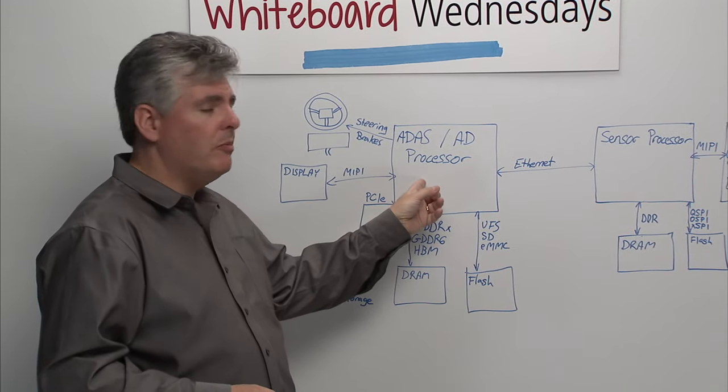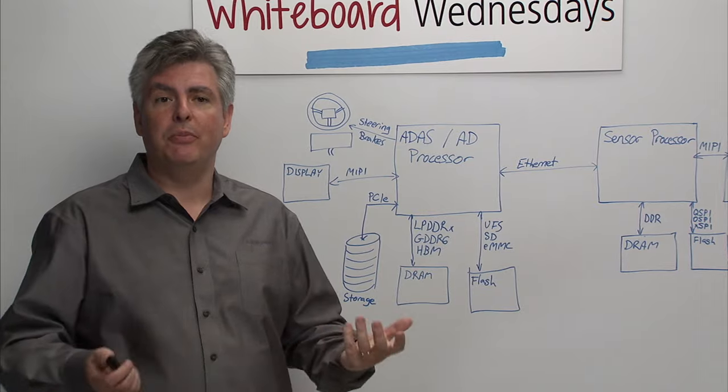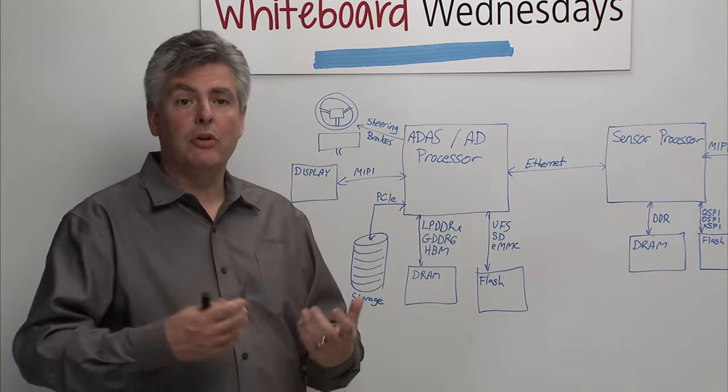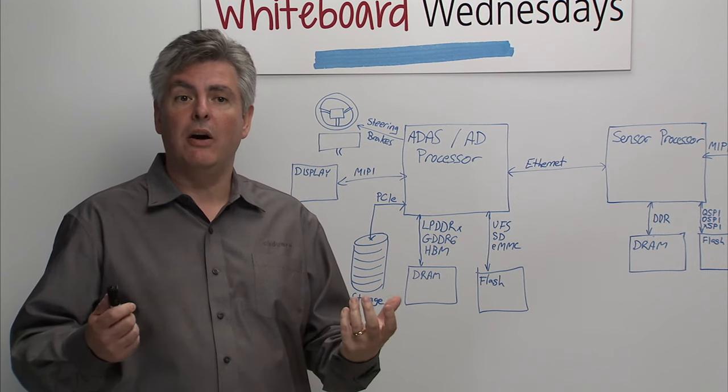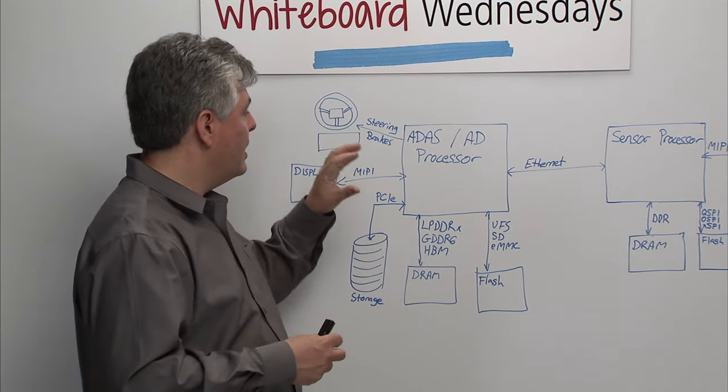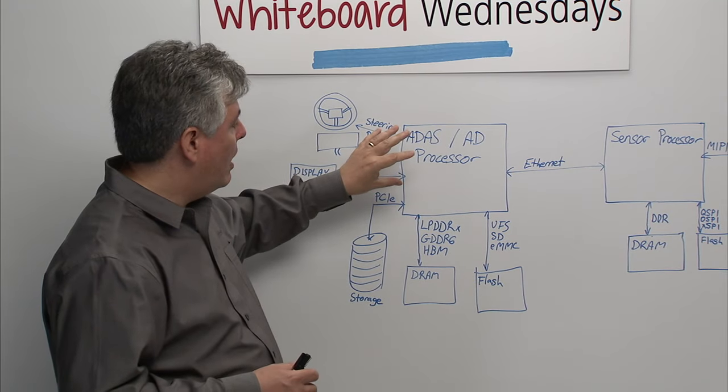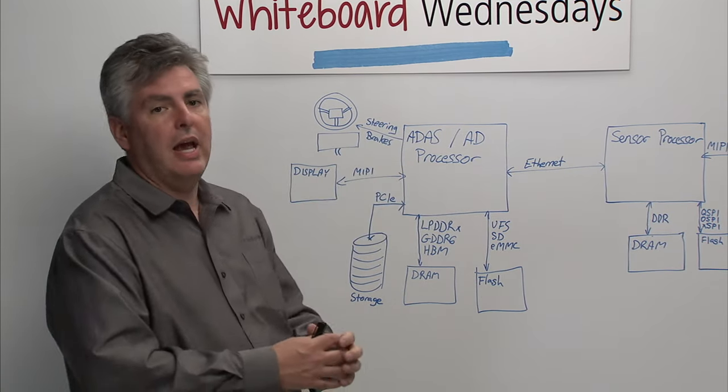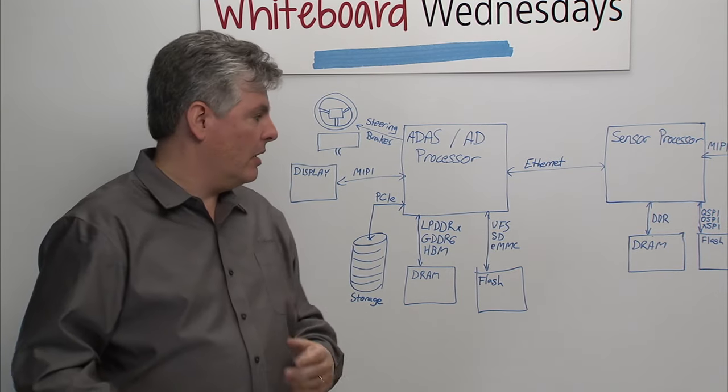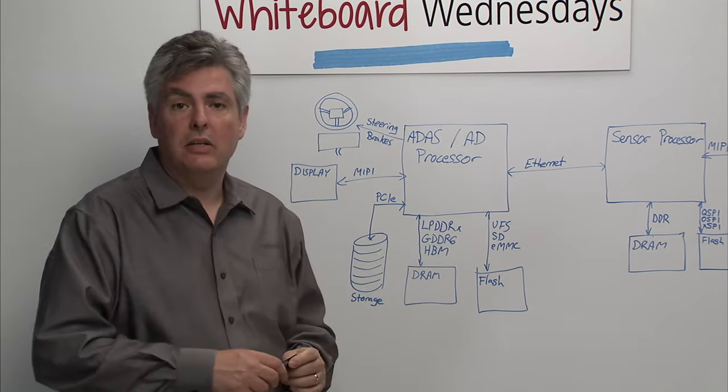So let's look at this main processor. This main processor is sometimes called a supercomputer on wheels. This is going to be a very powerful processor. It's going to incorporate elements typically of artificial intelligence, CNN networks, things that will allow all this data that's coming in to actually turn into an action that the car can take.